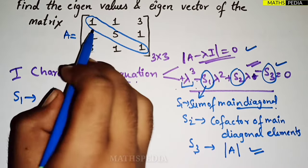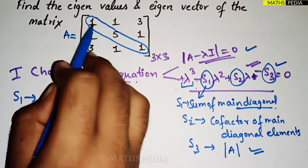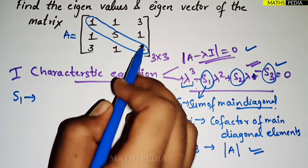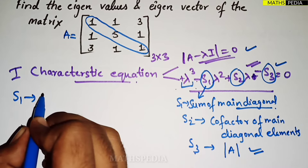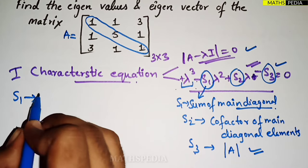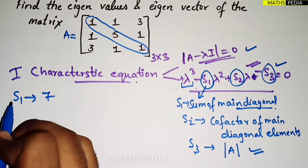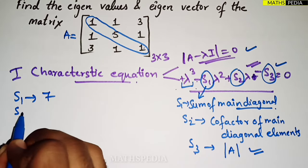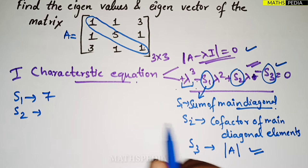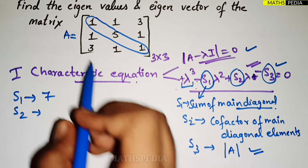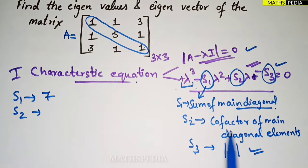Let's start with S1. S1 is the sum of the main diagonal elements, so S1 = 1 + 5 + 1 = 7.